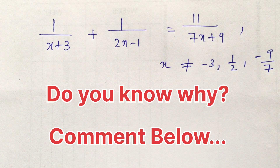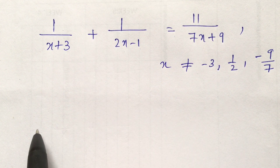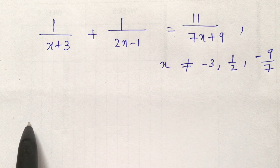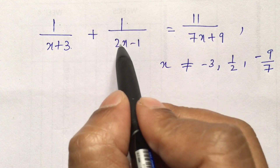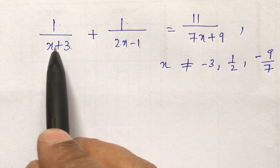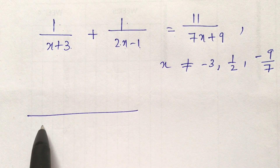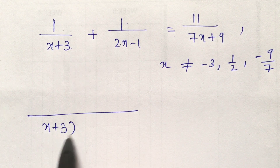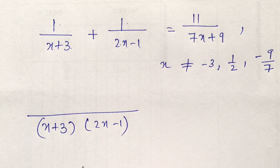So friends, to solve this type of problem, first of all we have to take LCM on the left hand side. In the left hand side we have 1/(x+3) + 1/(2x-1). In the denominator there is nothing common, so the LCM will be (x+3)(2x-1).